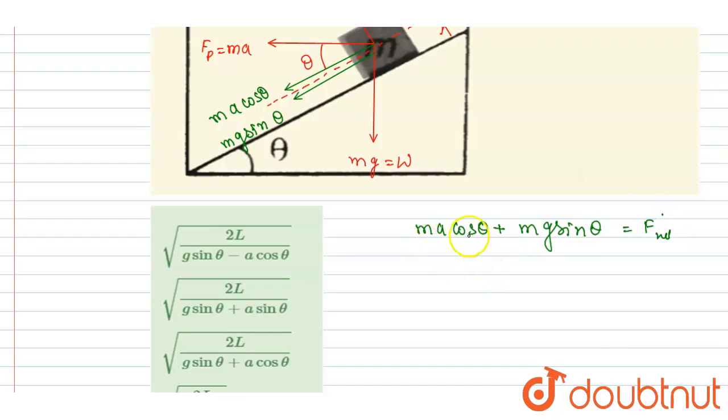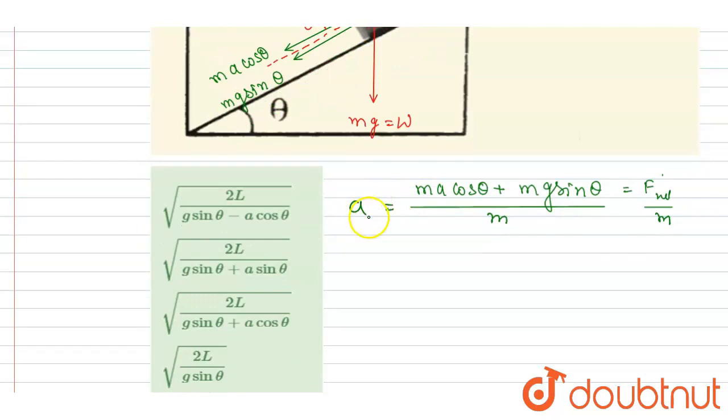If you divide this by mass, you will get the acceleration along the incline. Let's say it is a naught. So a naught will be equal to a cos theta plus g sine theta.